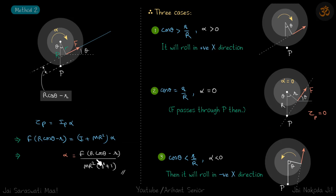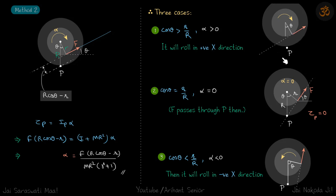The result for alpha is interesting because of the negative sign. Case 1: when R·cos(theta) is greater than r, the term is positive, so alpha is greater than zero — our assumption is correct and the spool rolls clockwise and moves towards the right. About point P, the torque is in the clockwise direction.